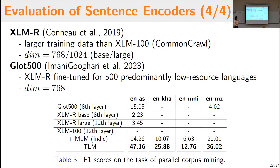We also wanted to benchmark against GLOT 500, a new pre-trained model specialized in low-resource languages, to check whether it would have better results than our models. We found that it doesn't perform well at all. The reason may be that we fine-tuned our model particularly for the four languages of interest, whereas GLOT was trained for 500 languages and also has smaller embeddings of 768 dimensions compared to our XLM model's 1,280, meaning less information hidden in the sentence embedding.